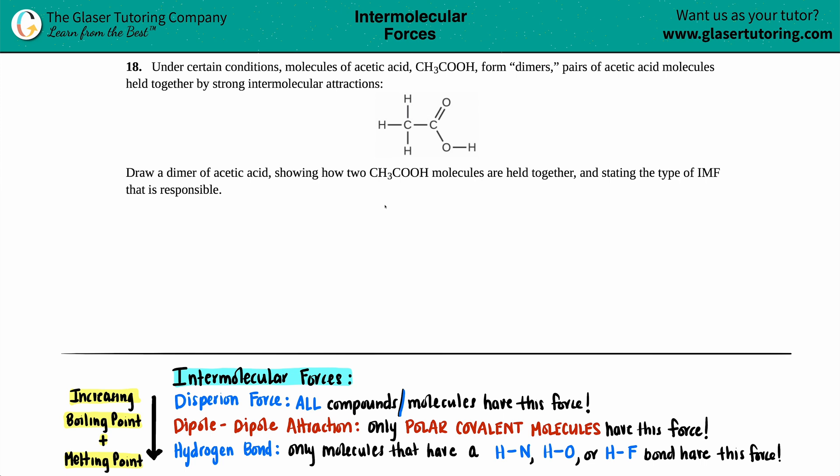Number 18. Under certain conditions, molecules of acetic acid, which is CH3COOH, form dimers, which are pairs of acetic acid molecules held together by strong intermolecular attractions. And then they give us the molecule for acetic acid. And now here comes the question. We have to draw a dimer of acetic acid showing how two CH3COOH molecules are held together and then state the type of IMF, which is intermolecular force, that is responsible for this.